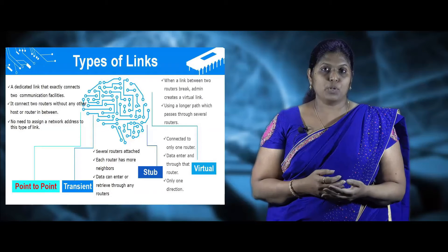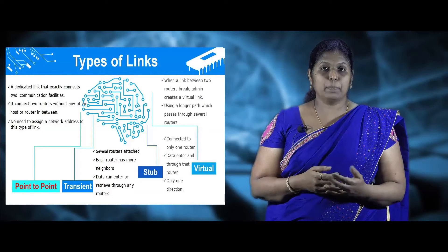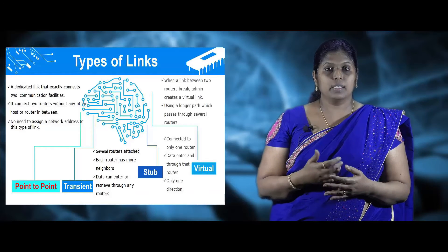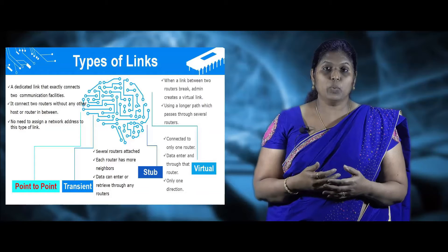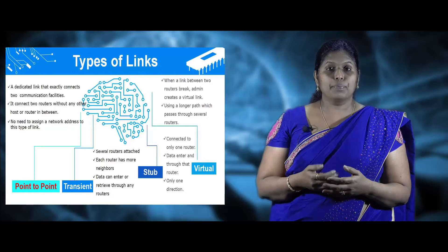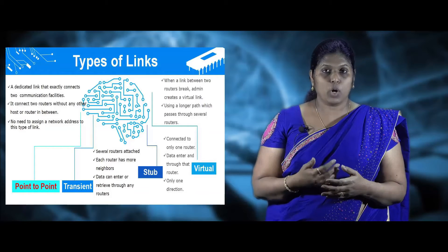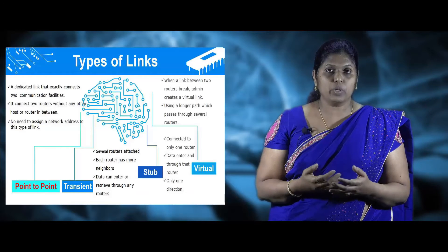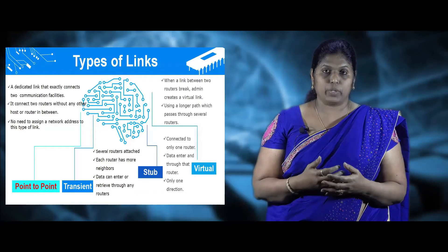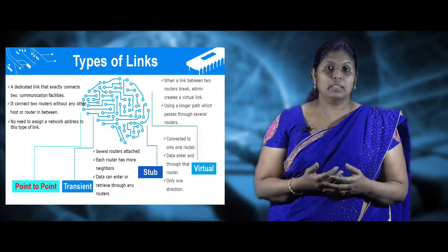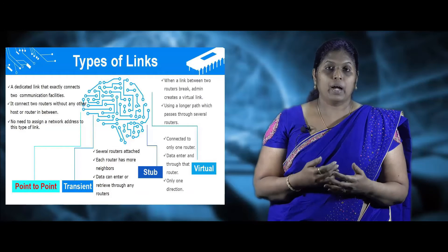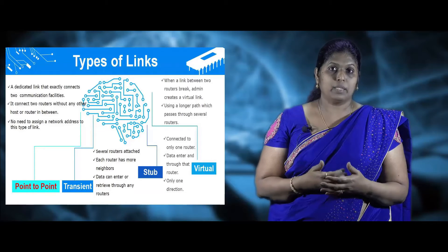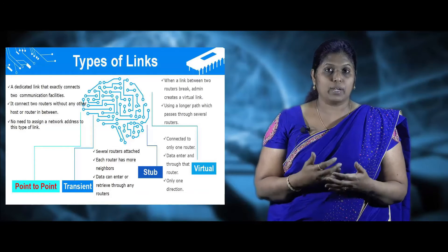There are four types of links in OSPF. The first is the point-to-point link, the second is the transient link, the third is the stub link, and the fourth is the virtual link. A point-to-point link is a dedicated link between two devices connected to each other, with two routers connected without any host. In this point-to-point link there is no need of addressing — that is, no network addressing is required.